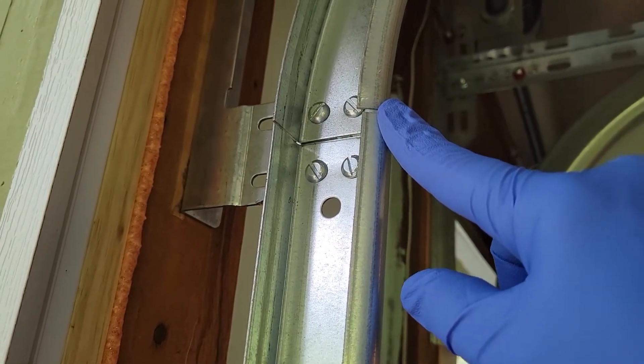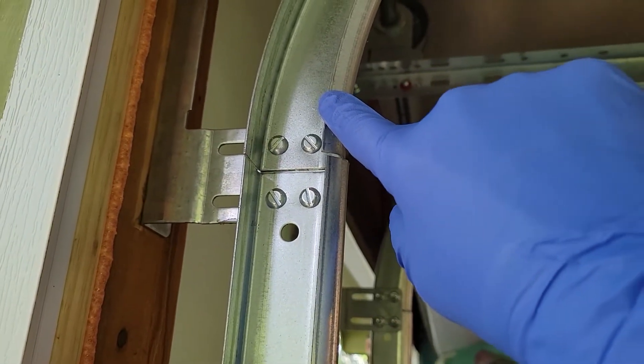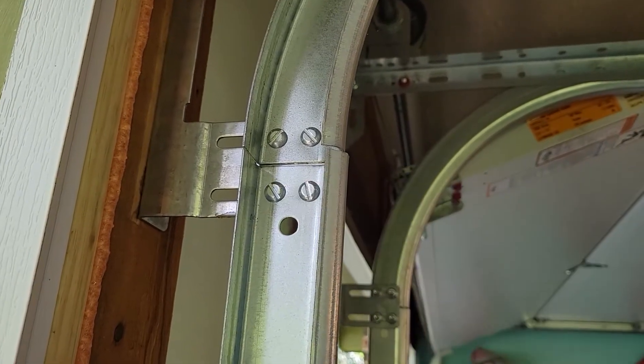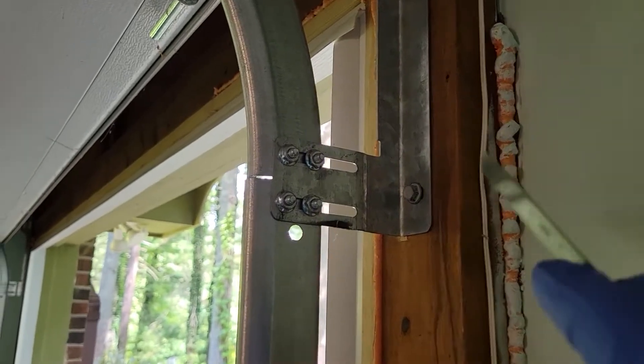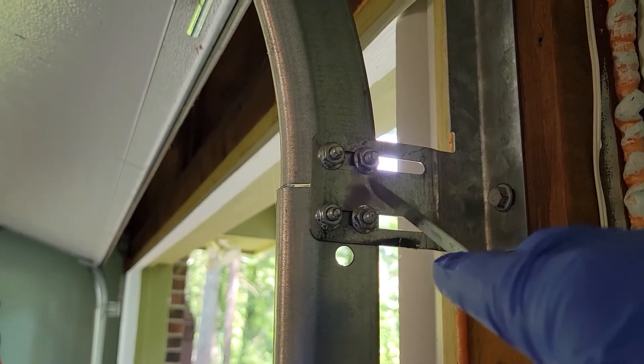The question is, can the track either be moved this way to meet this one, or can this one be slid in? To answer that, we need to look at the support and see how the tracks are held in place.